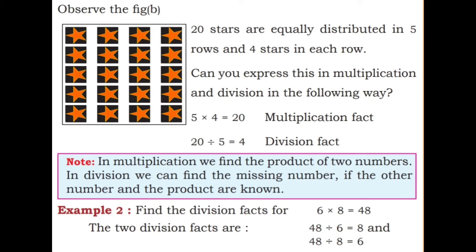Example 2: find the division facts for 6 into 8 is equal to 48. The two division facts are: 48 divided by 6 is 8, and 48 divided by 8 is 6. And 6 eights are 48 and 8 sixes are 48.